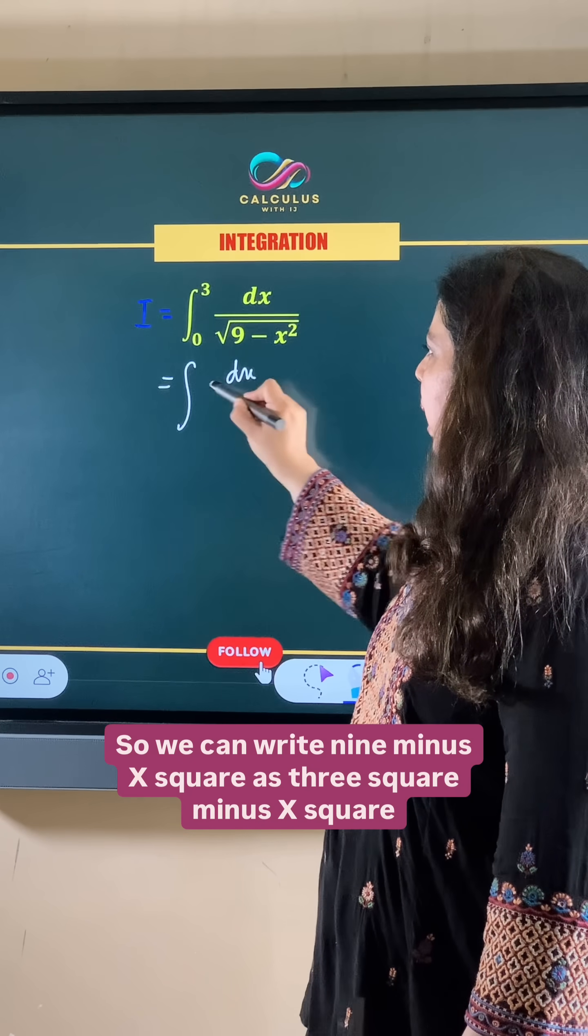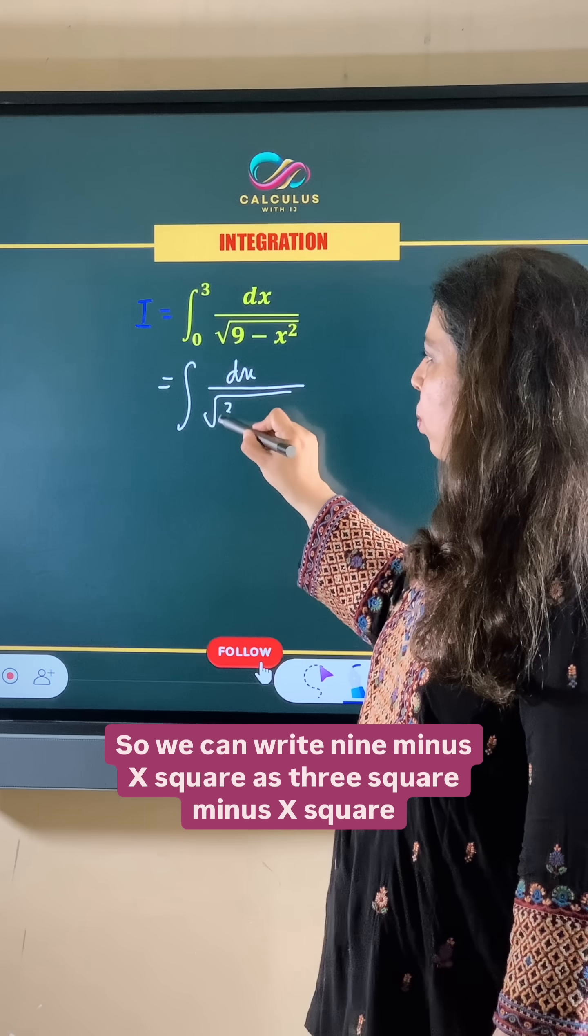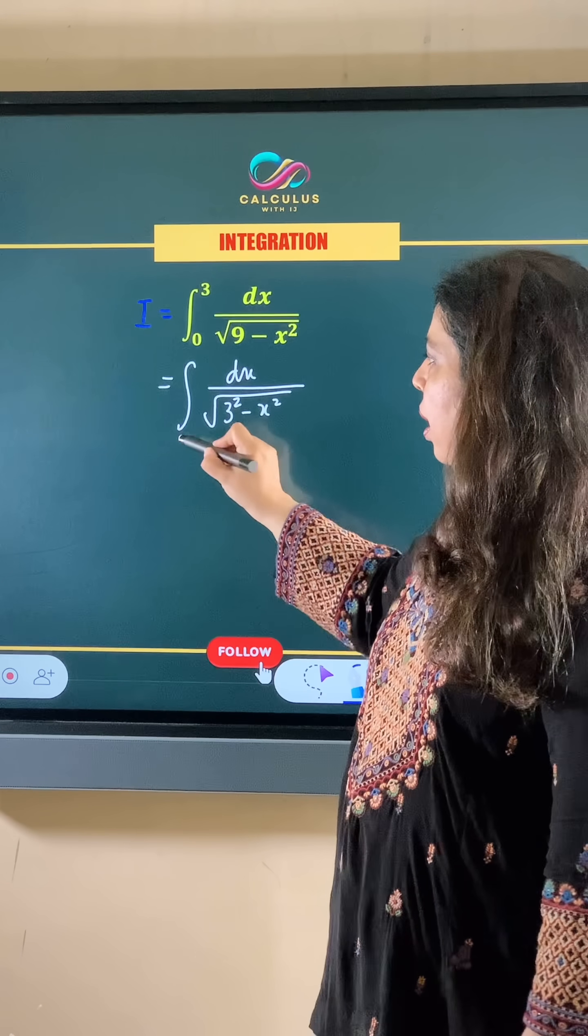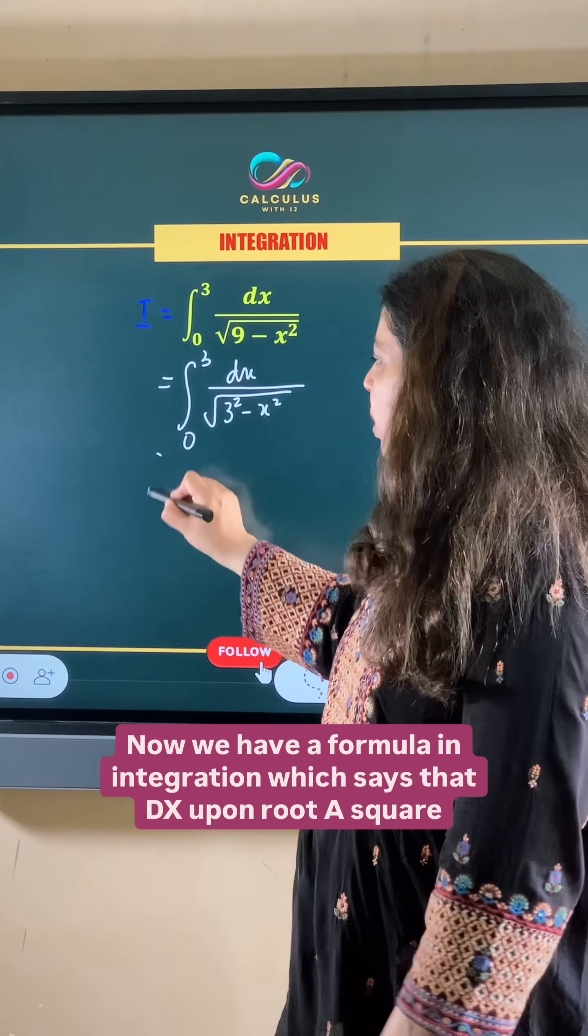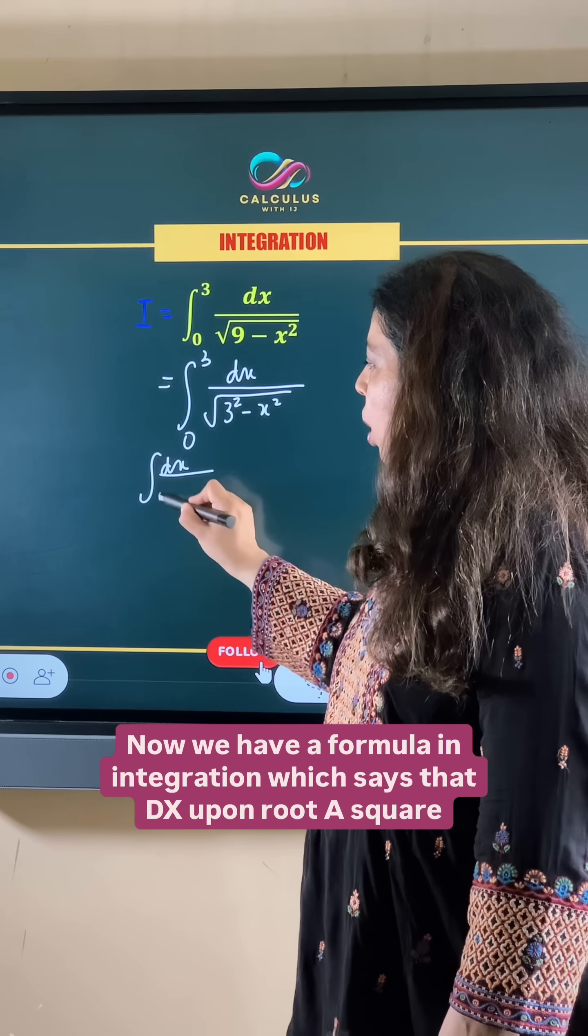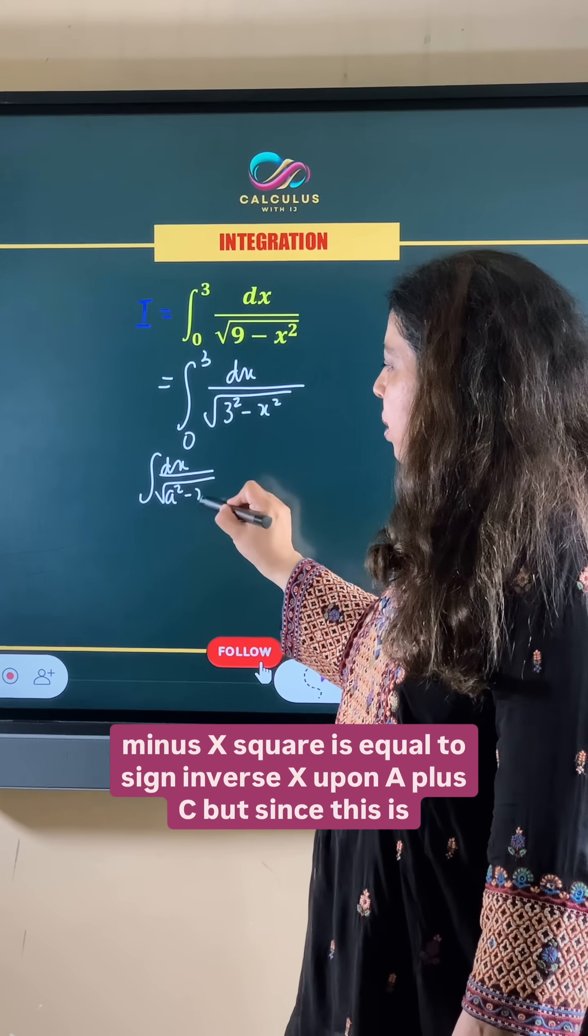So we can write 9 minus x square as 3 square minus x square and limits are from 0 to 3. Now we have a formula in integration which says that dx upon root a square minus x square is